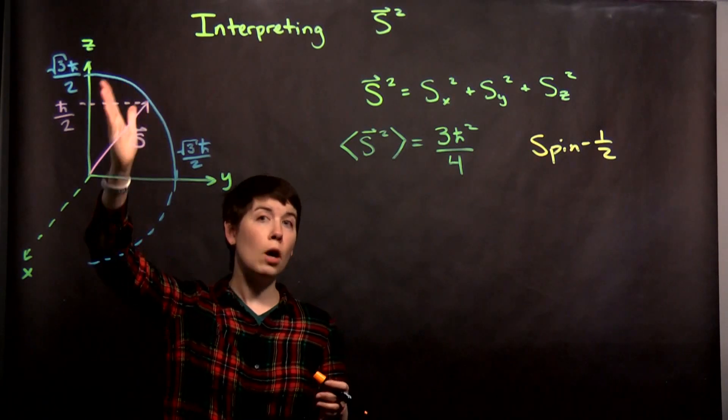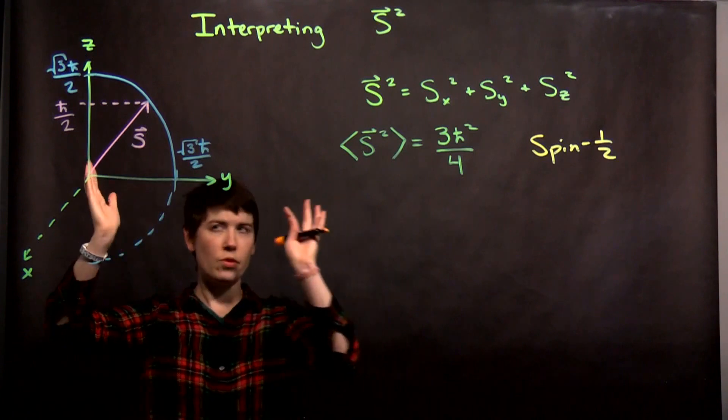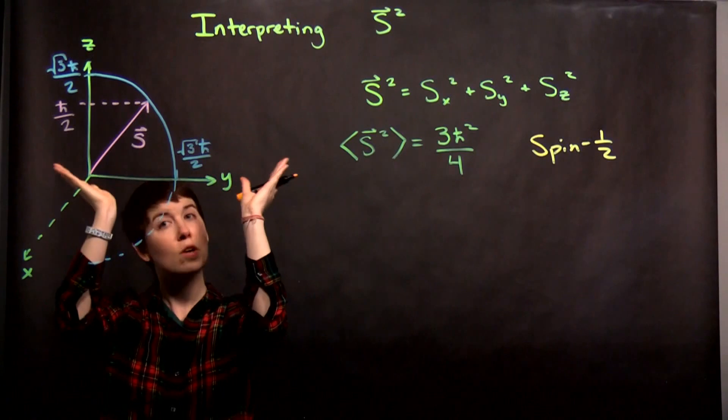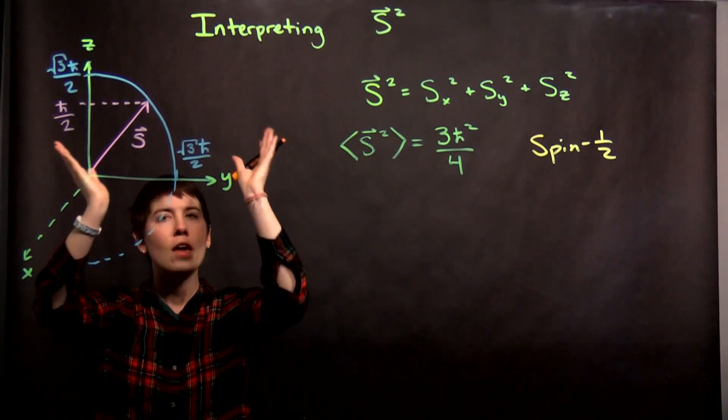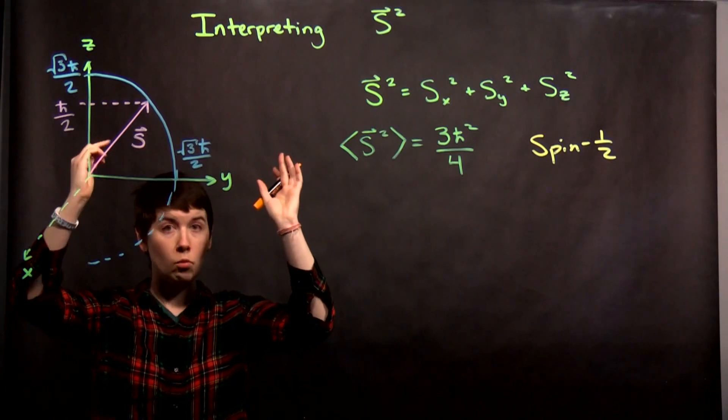We do get a component in the z-axis, but once we do that, and again, three dimensions here, you can imagine rotating the spin vector around, basically tracing out a cone. And that means we don't know the orientation in x or y.